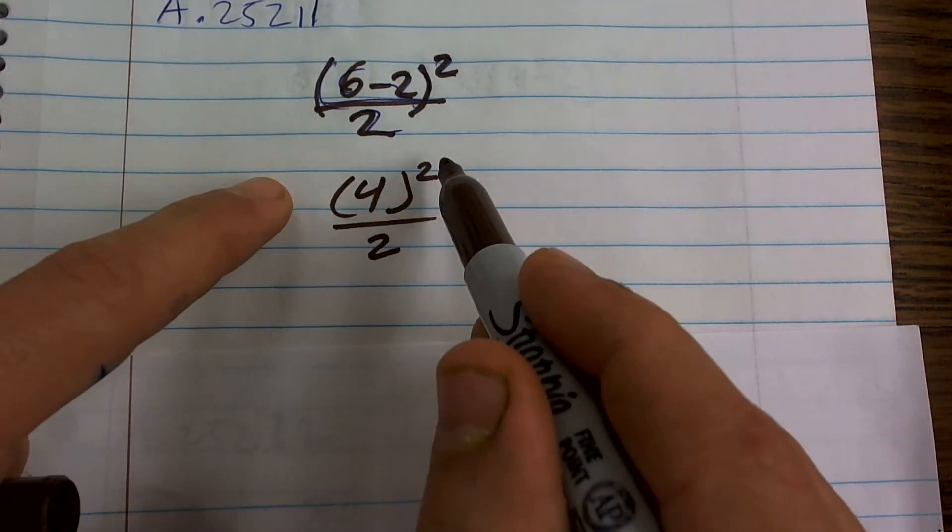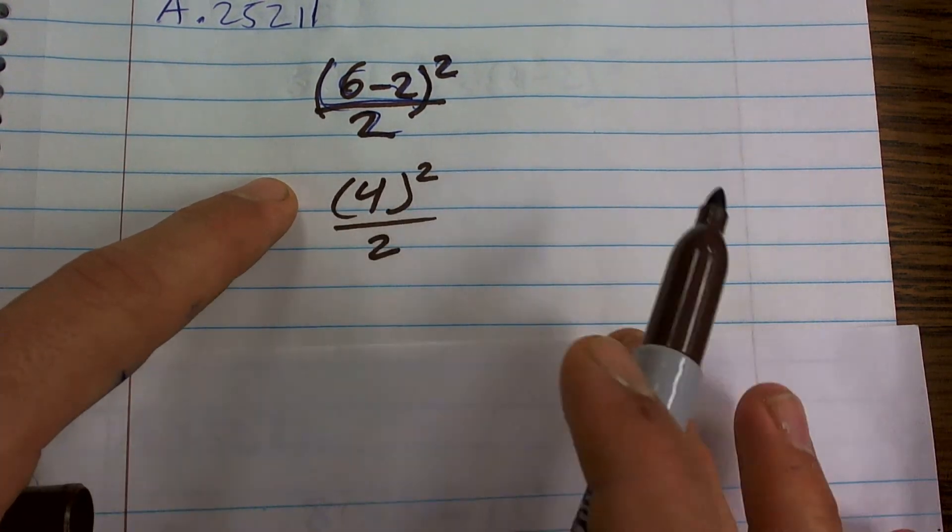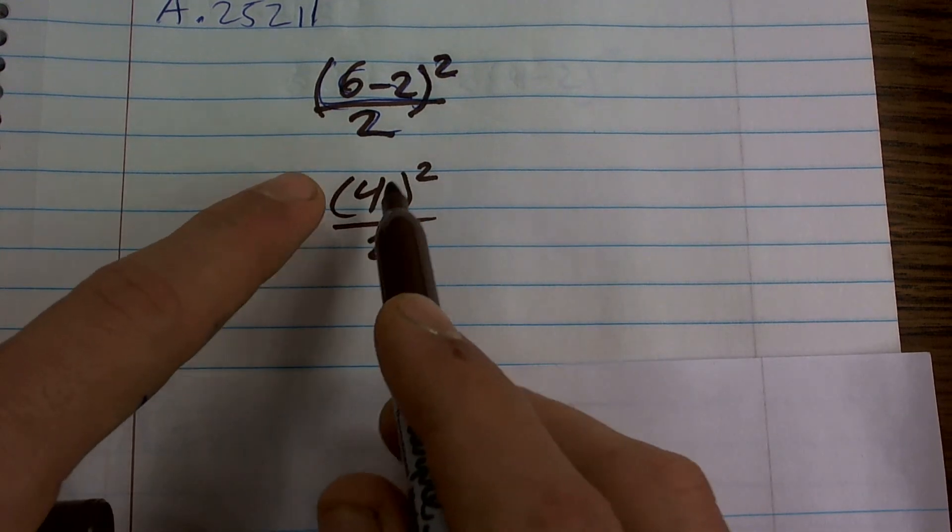Now, I left this in parentheses just so you could see that it's going to be 4 squared. But obviously, inside this parentheses, I can't do anything else, right? So now, I just need to apply 4 squared.